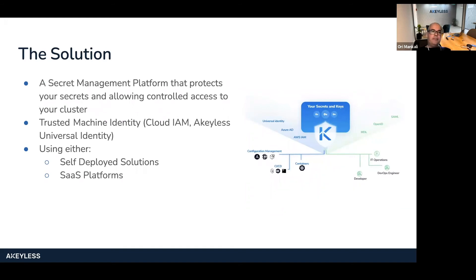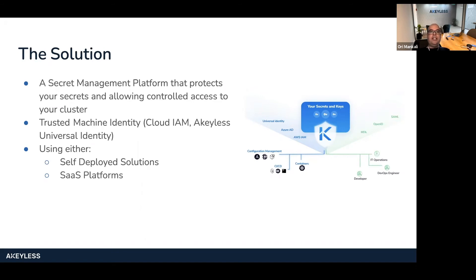The general solution is to use a secret management platform. This platform protects your secrets because they are encrypted and only used at the application level. You also have controlled access to the Kubernetes cluster. To do that, you need a trusted machine identity, meaning you can authenticate to the secret management platform using either cloud IAM or Achilles Universal Identity to solve the secret zero problem. Solutions available in the market today are either self-deployed — meaning you set up the infrastructure and have a dedicated IT and DevOps team to maintain it — or you can use a SaaS platform that takes care of high availability, replication across regions, and minimal latency for you.